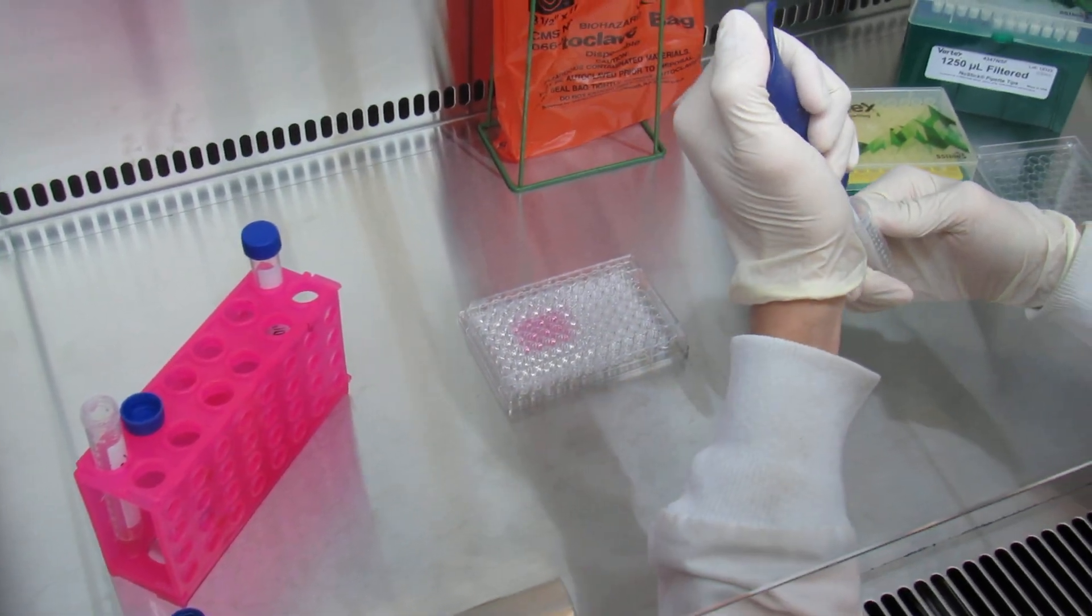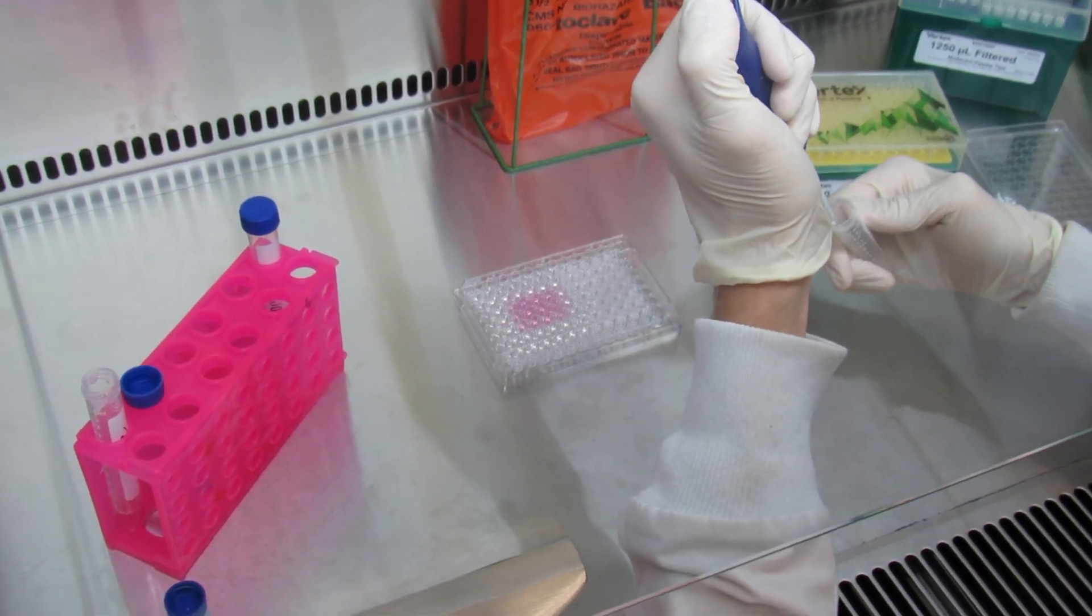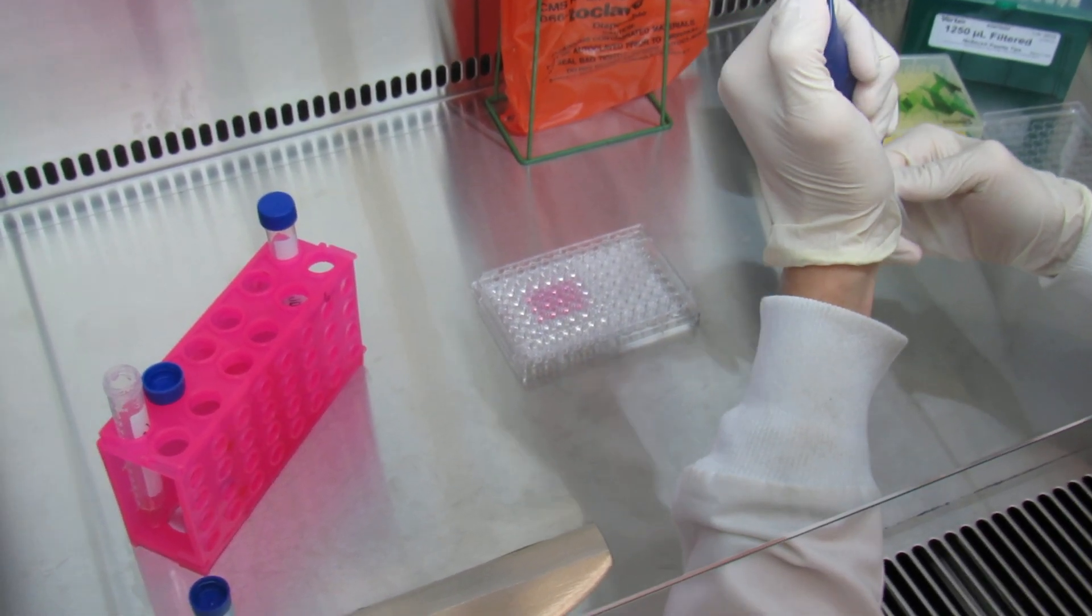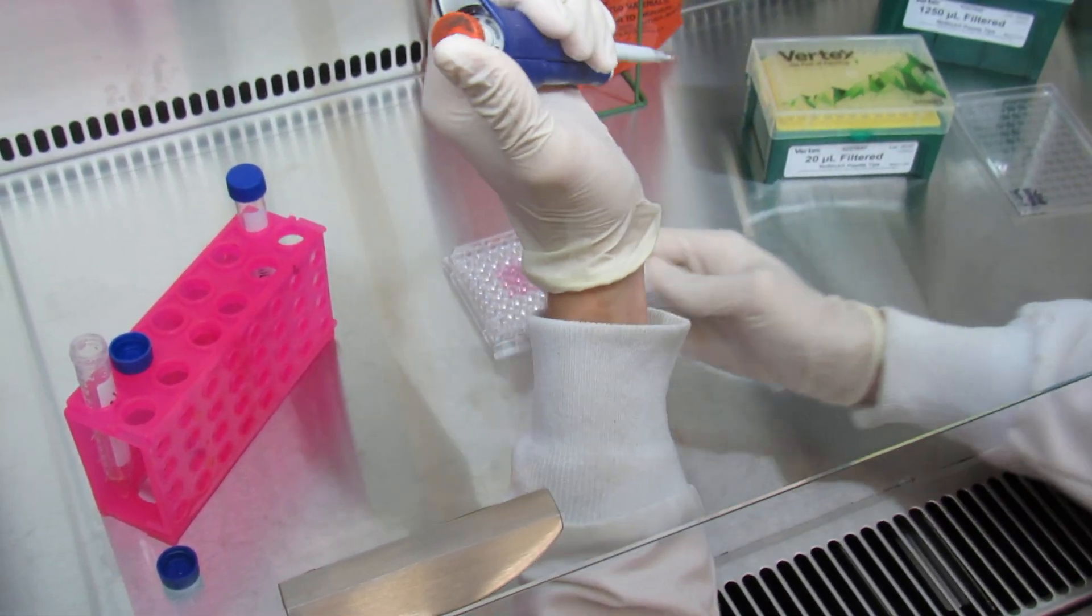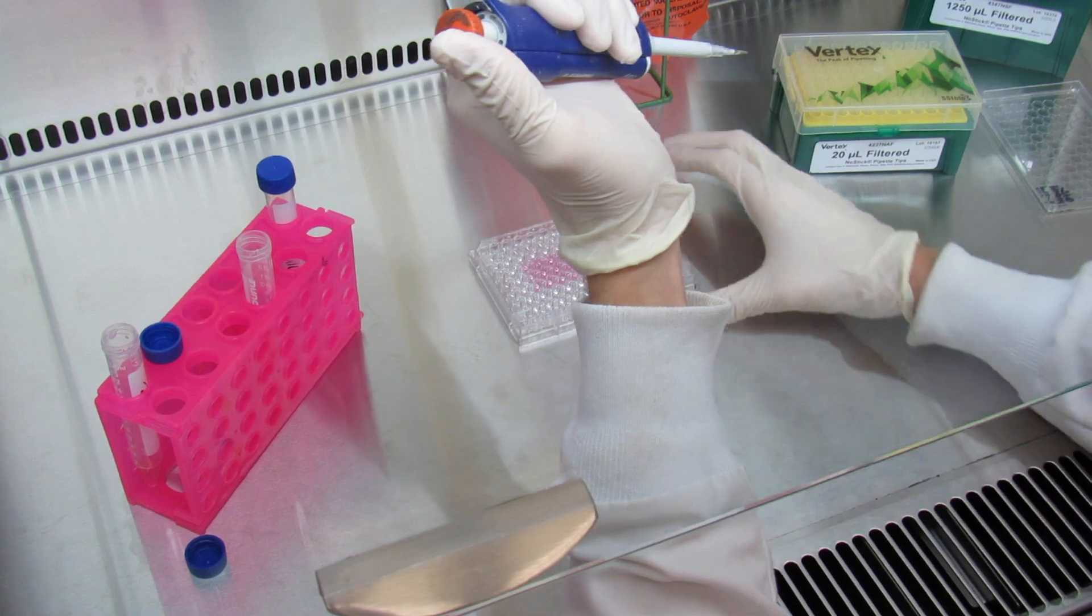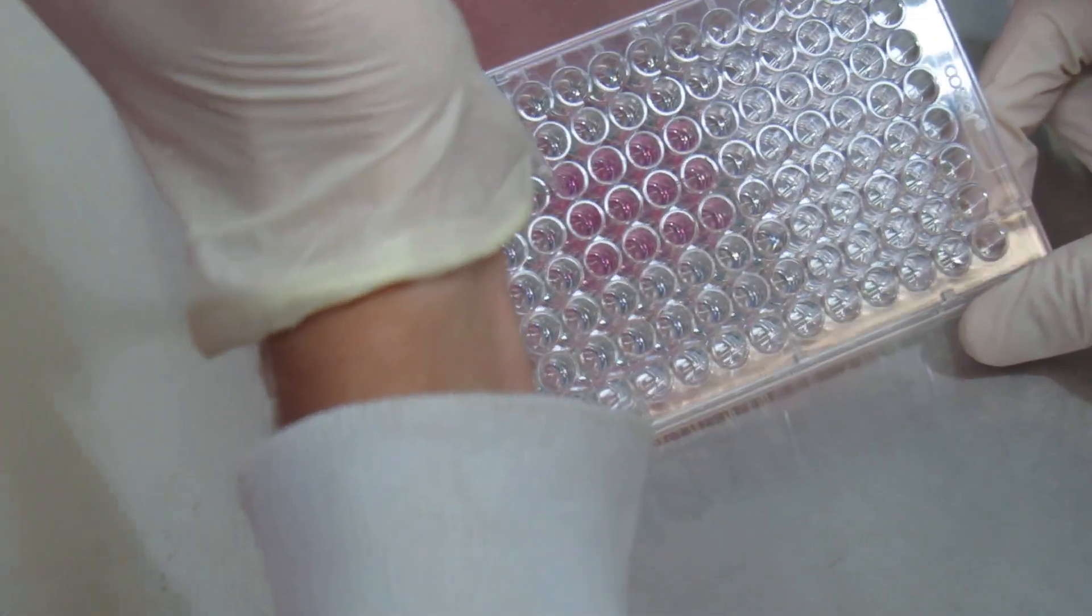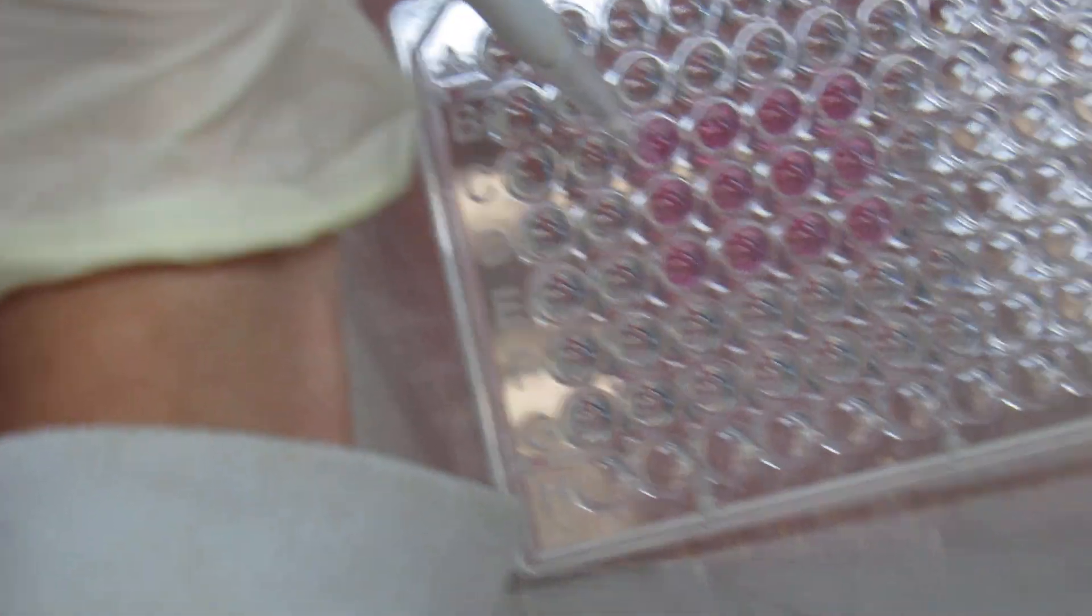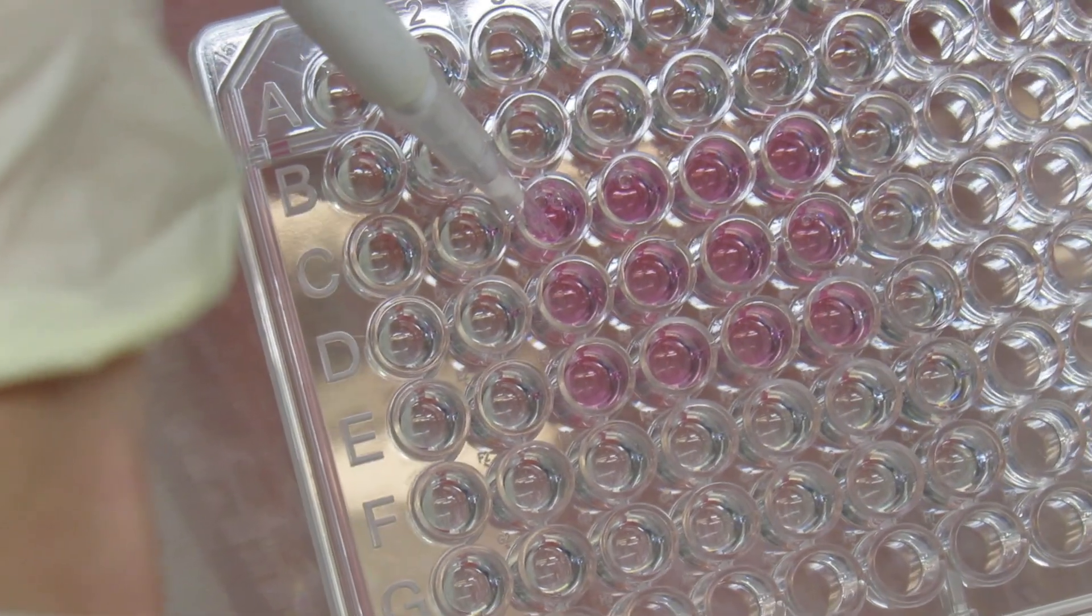You'll take 10 microliters of DMSO and you'll work with one well at a time. I'm going to add the DMSO directly into the DMEM of the first well of the first row.